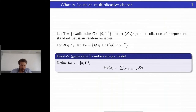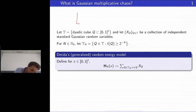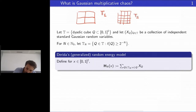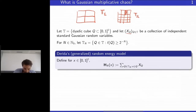I want to start by reviewing what a Gaussian Multiplicative Chaos, or GMC, is. In the simplest setting we consider dyadic intervals: you have a square and divide it into intervals — this is t1 — then divide again into smaller intervals — that's t2. For each one of those little squares you assign a standard Gaussian random variable; they are all independent.